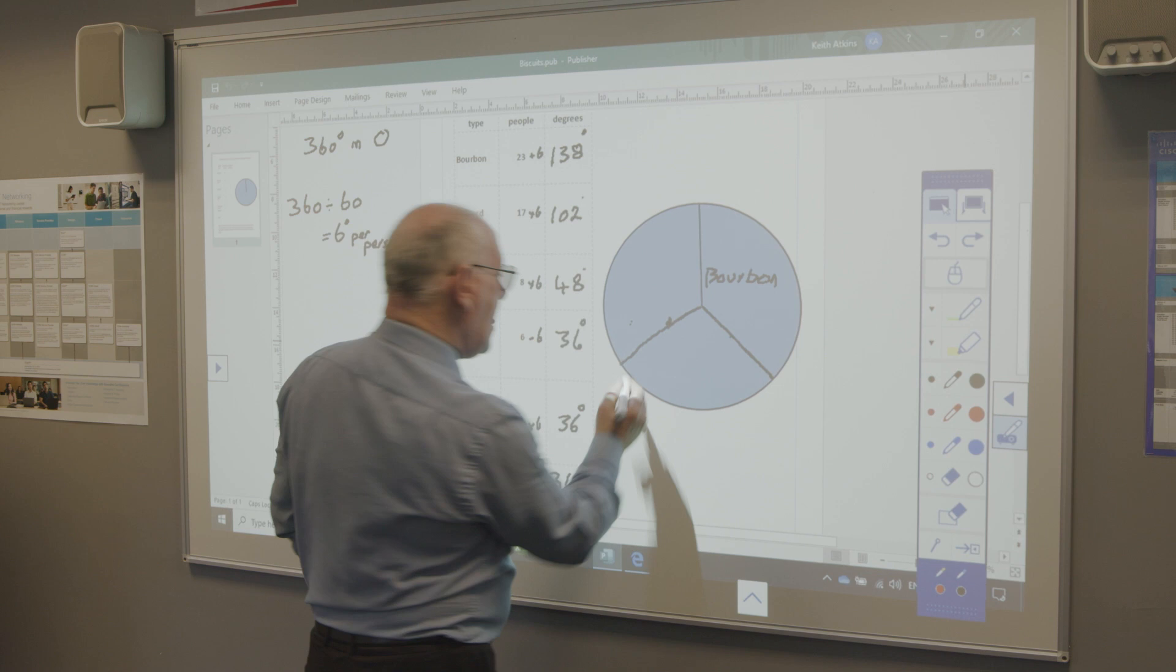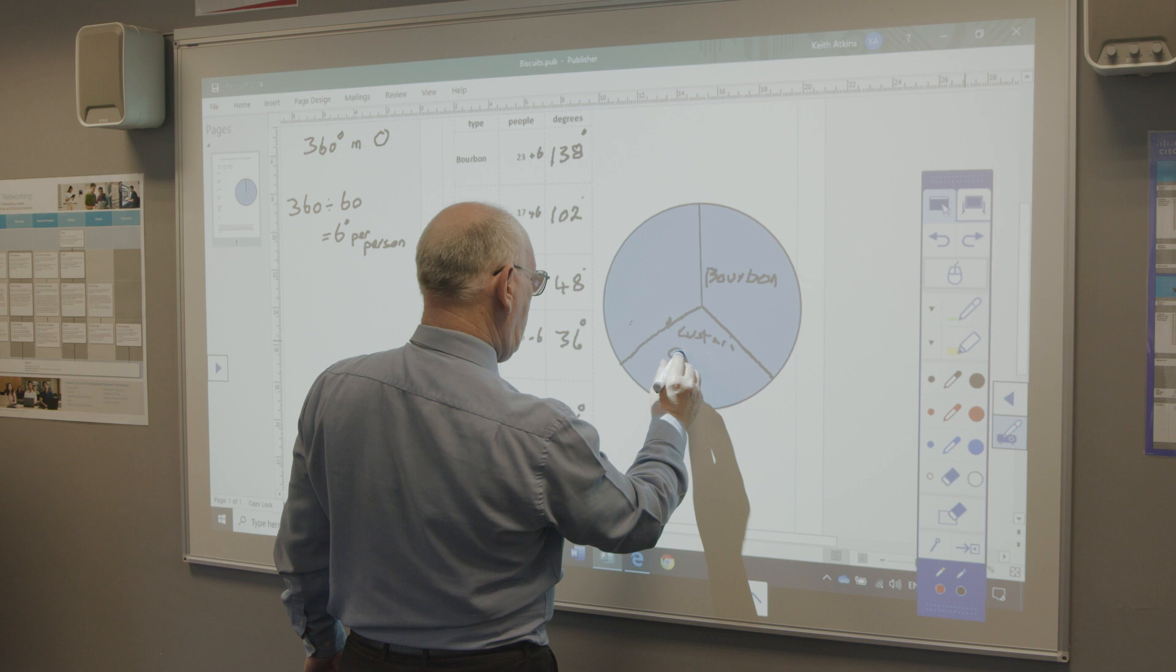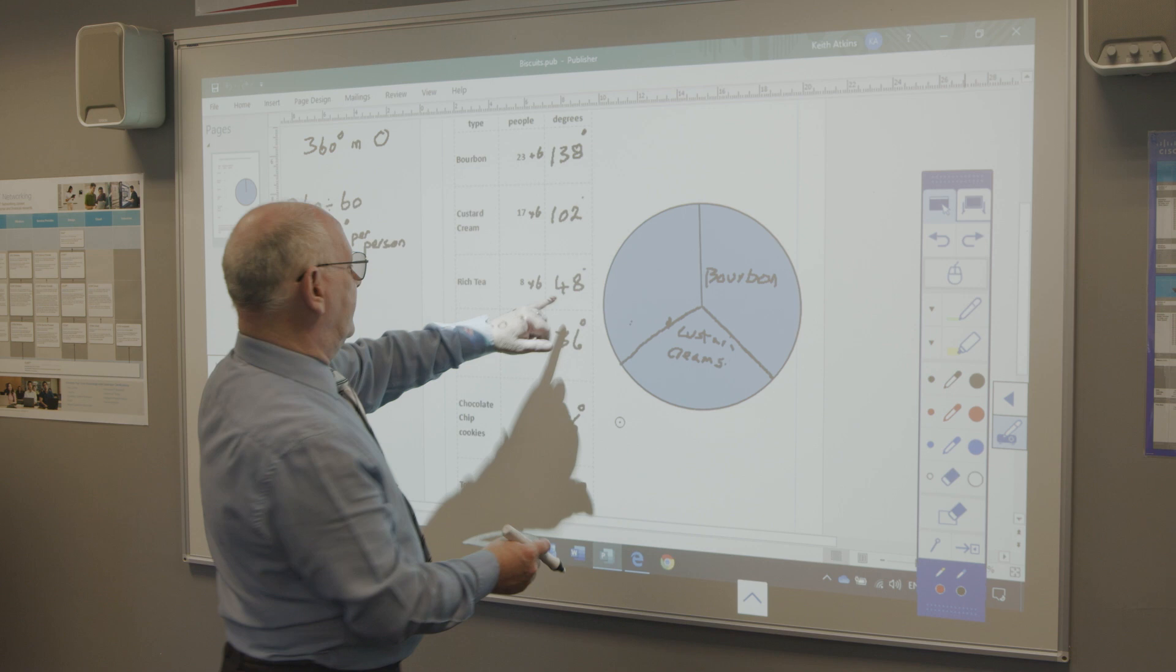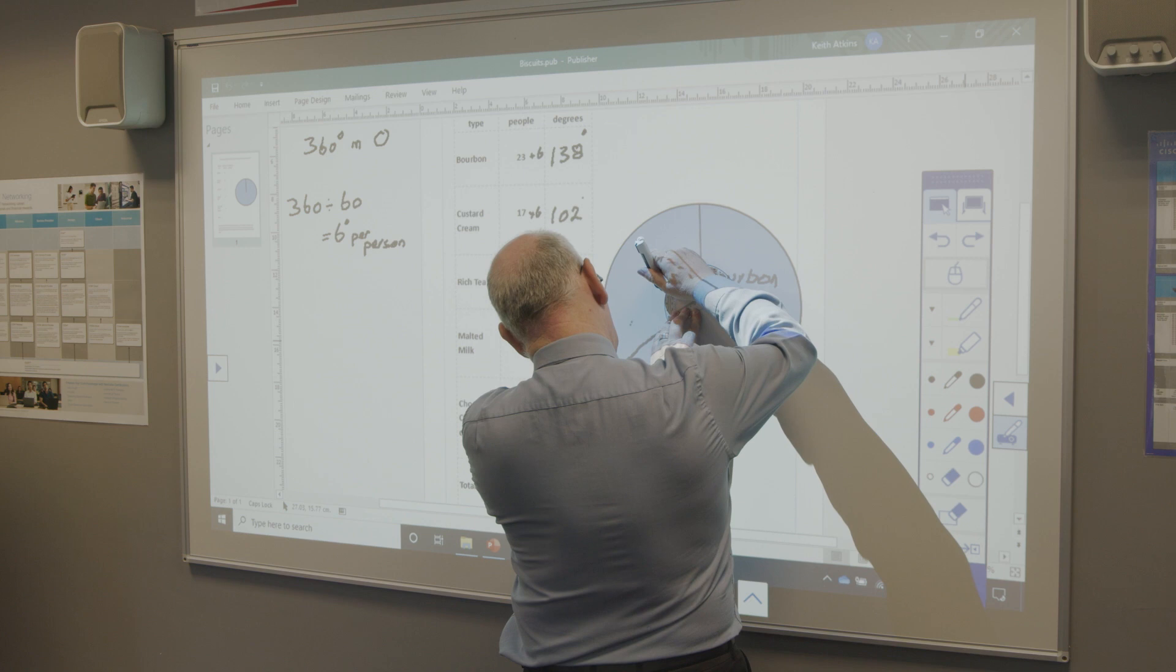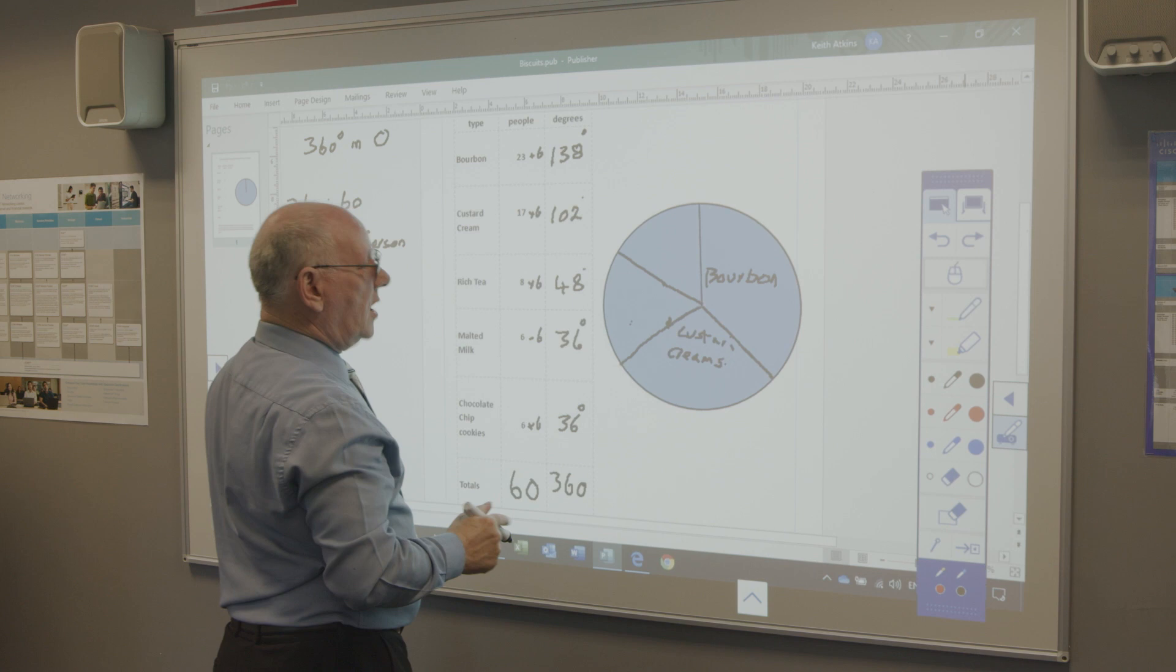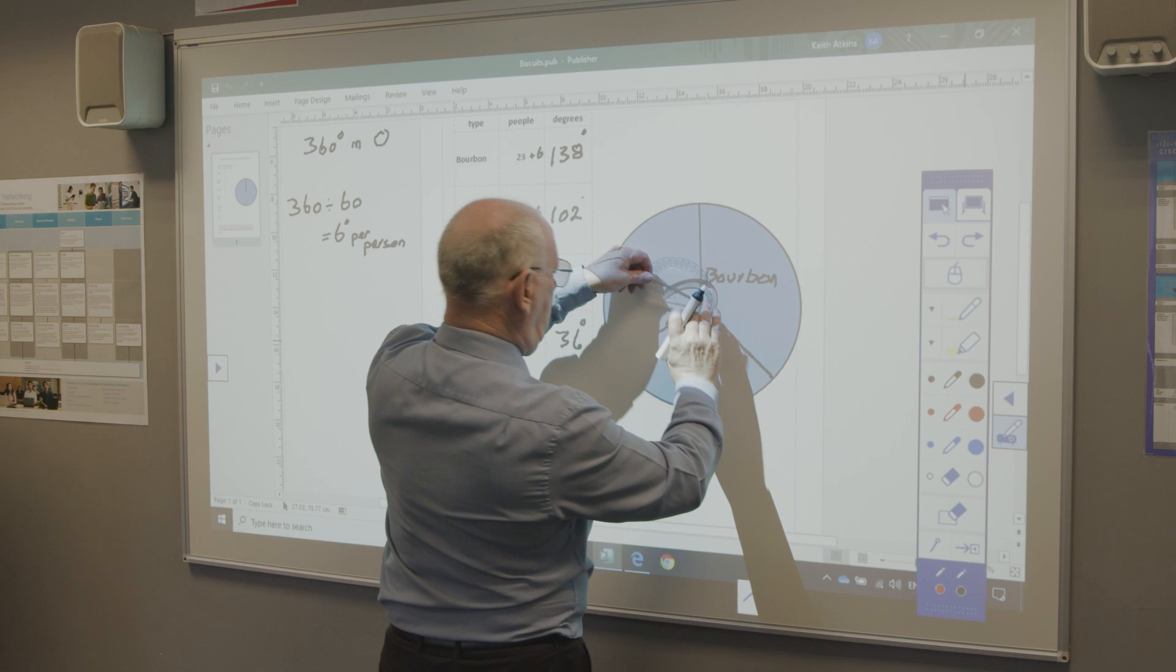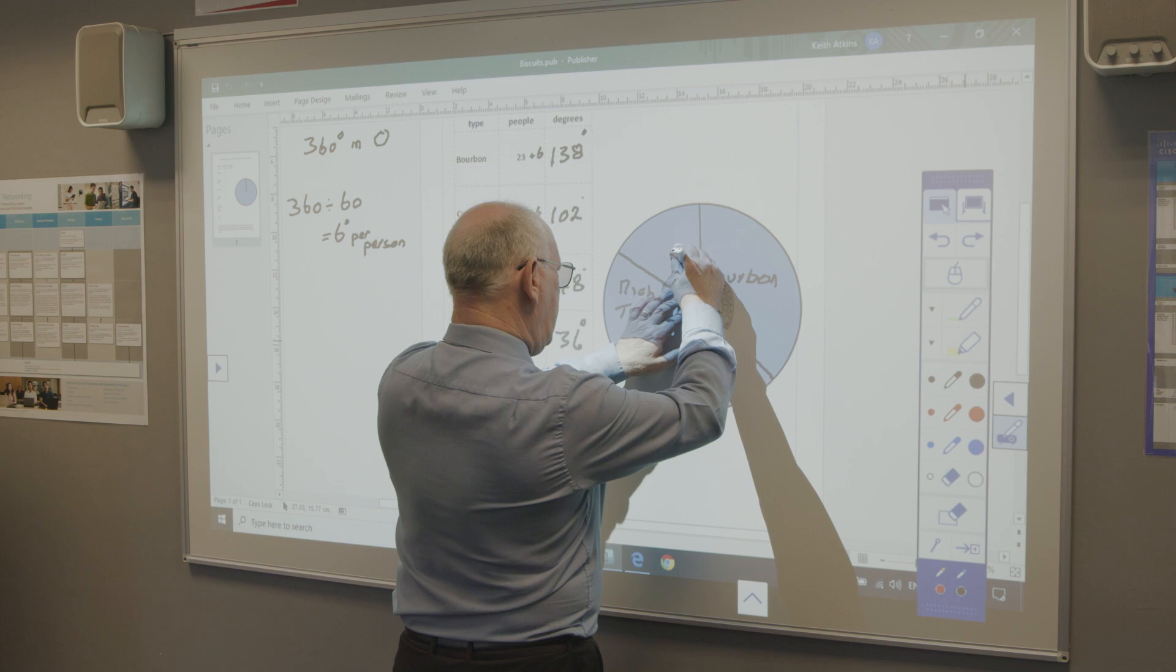Remember, you're doing all this with a ruler. Custard creams. 48. Excuse my back a minute.